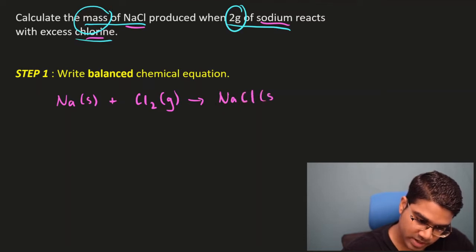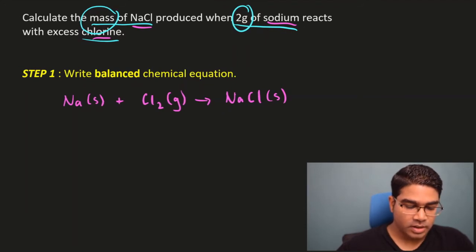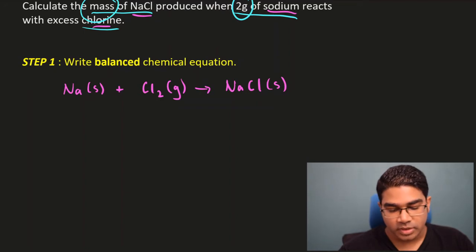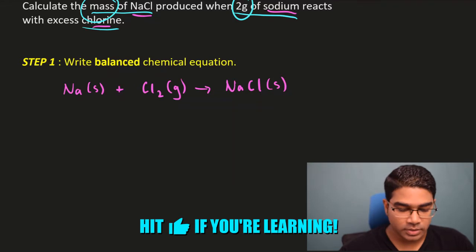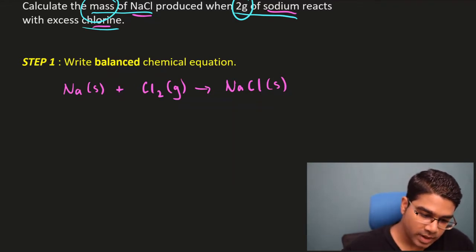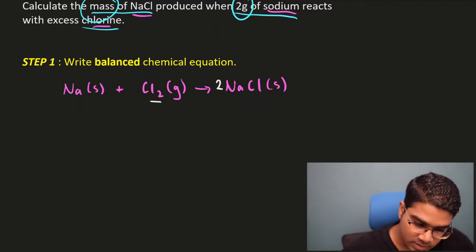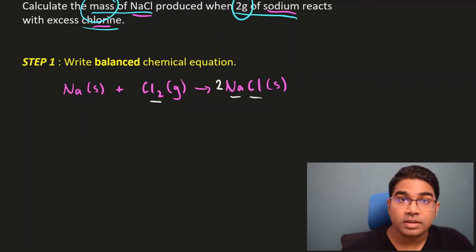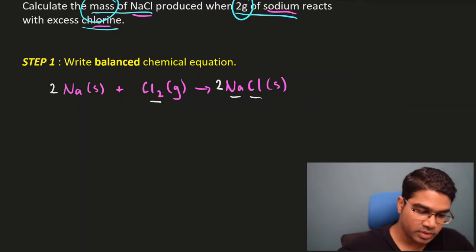Now we need to balance the equation. We check the number of atoms on each side: one sodium on the left, one on the right — that's fine. But chlorine has two on the left and one on the right, so we add a 2 in front of NaCl. Now we have two sodium atoms on the right, so we add a 2 in front of sodium. It's balanced.